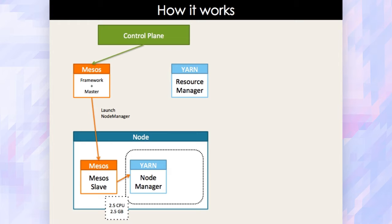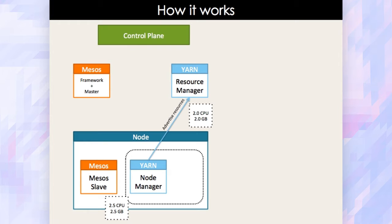For the rest of the talk, whenever you see the Mesos block, it basically means Aurora framework and the Mesos master — it's a single block for the sake of brevity. The control plane asks Mesos to launch a node manager, and the node manager gets launched as a task on the node. In this example, the node manager gets 2.5 CPU and 2.5 GB of RAM. Once the node manager process comes up, it registers with Yarn's resource manager and advertises a subset of resources that it has been allocated — because it needs some resources for itself to run.